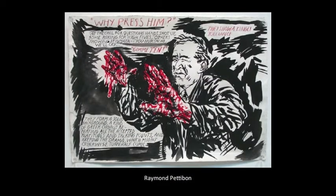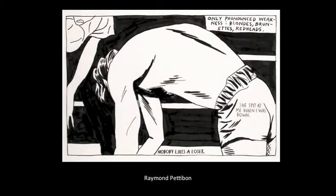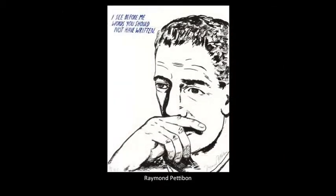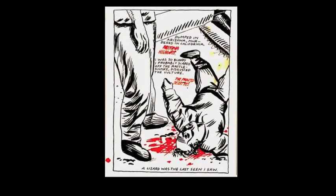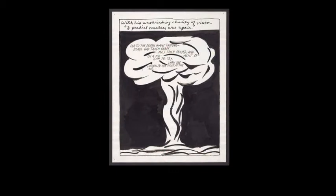Raymond Pettibone's graphic style depicts the outsider and the deviant. His work initially appeared in self-published photocopied booklets. His drawings include text of his own writing or quotes from well-known authors. While not narratives per se, the image and text in his work often puts the viewer in the uncomfortable position of voyeur watching a scene we were not meant to witness.